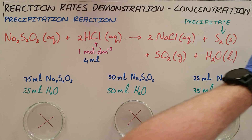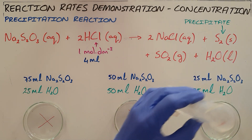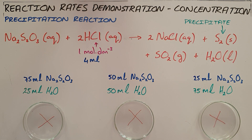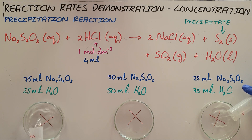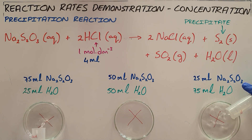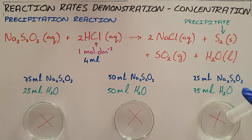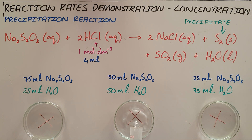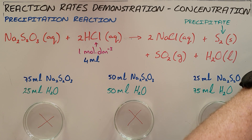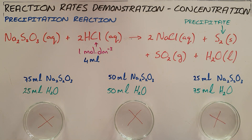So we're going to start by adding our sodium thiosulfate into each petri dish. You'll see that solution A is 75 mols sodium thiosulfate and 25 mols water. Solution B is 50-50, and solution C has 25 mols sodium thiosulfate and 75 mols of water.